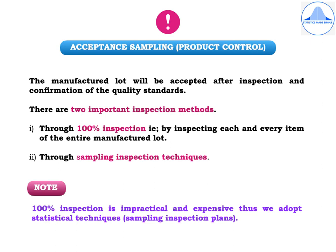All of you are aware of process control, where we control the quality of the product during its manufacturing process, and for it we make use of Shewhart control charts. Here we will talk about product control or acceptance sampling. Whatever products are manufactured will be accepted after inspection only if they conform to the quality standards. There are two important inspection methods: one is through 100% inspection, that is by inspecting each and every item manufactured in the lot. The second is through sampling inspection plans. 100% inspection is impractical and expensive, so in most cases we make use of statistical techniques, that is the sampling inspection plans.